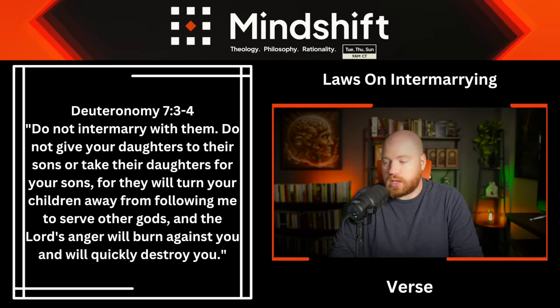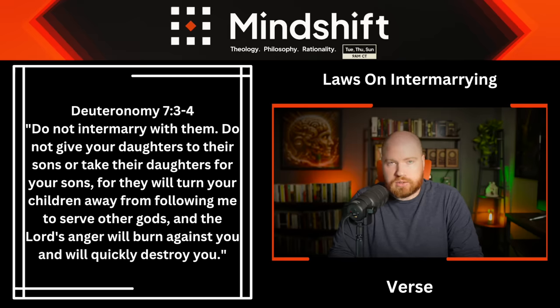Naomi, her husband, and her two sons go to Moab — long enough for both sons to marry Moabite women. Another issue: they are absolutely not supposed to intermarry with foreigners. Deuteronomy 7:3-4 reads: 'Do not intermarry with them. Do not give your daughters to their sons or take their daughters for your sons, for they will turn your children away from following me to serve other gods, and the Lord's anger will burn against you and will quickly destroy you.' This applies to the Moabites as well. So this is 100% disobedience to Yahweh, and they are supposed to be quickly destroyed for it.